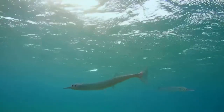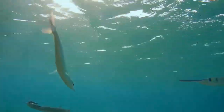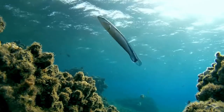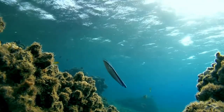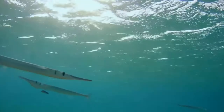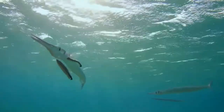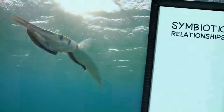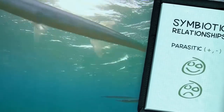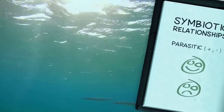Not all interactions on the coral reef are win-win, however. Take the saber-toothed blenny. It looks like a wrasse, but instead of providing a beneficial cleaning, it usually takes a bite from its client's body. This parasitic relationship means one organism benefits while the other is harmed.